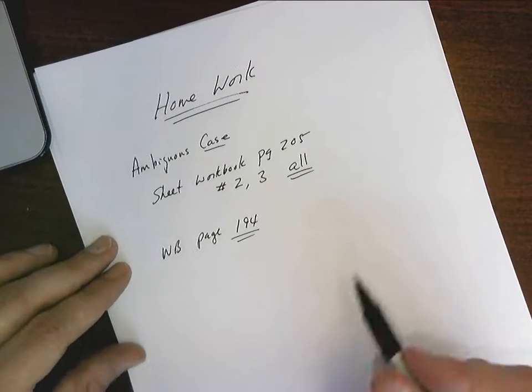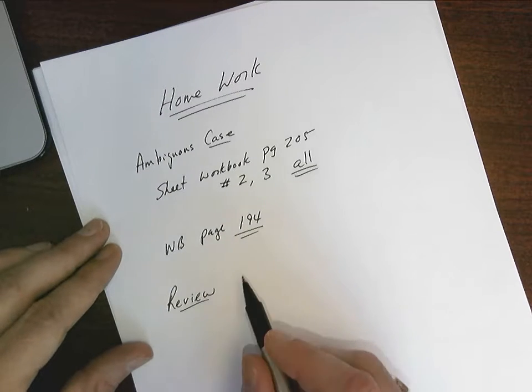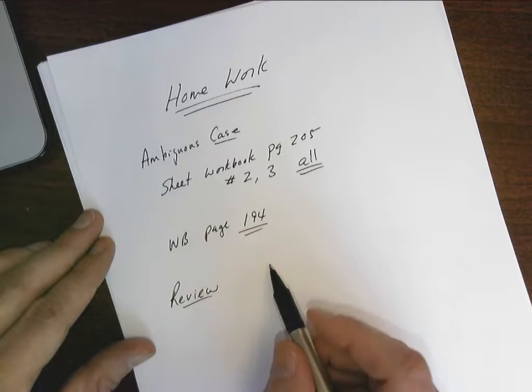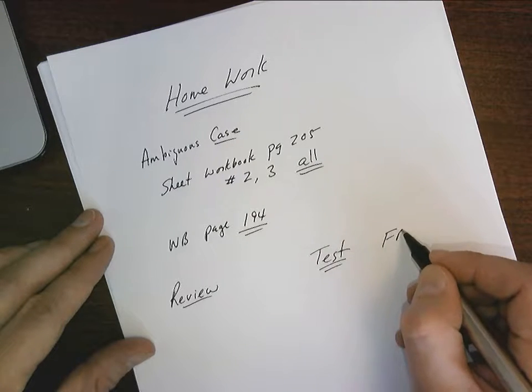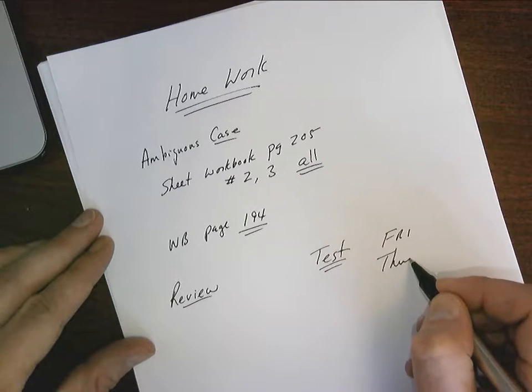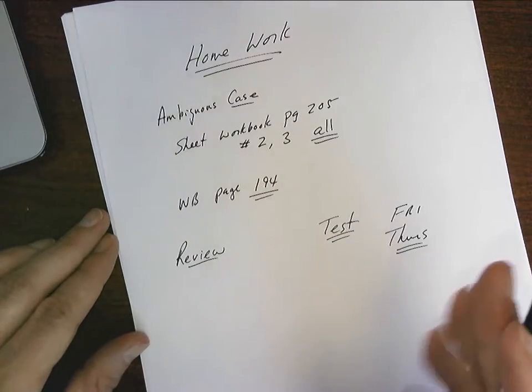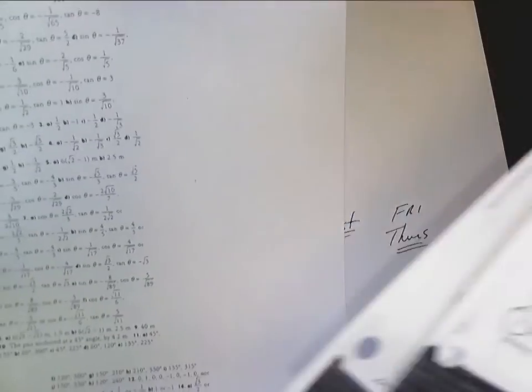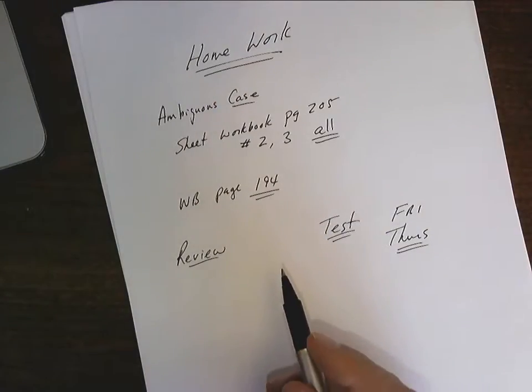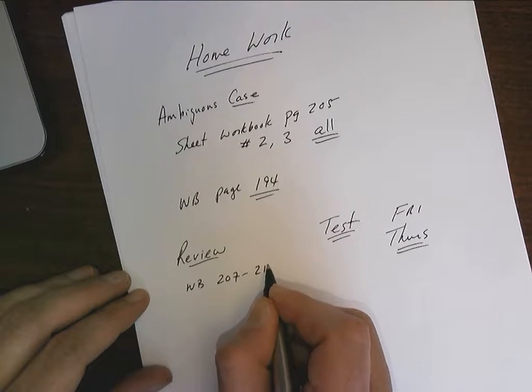Last but not least, if you want to start on a review for this unit, I've got trig identities to teach you next week, and we've got a test coming up no later than Friday. I'm going to try for Thursday, but no later than Friday. A test on all of this, and it's going to include, here's your review. Your review goes from page 207 all the way up to workbook 213. So it's workbook 207 all the way up to 213.